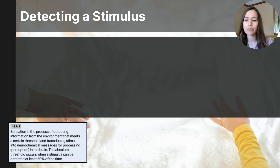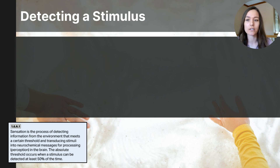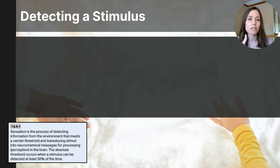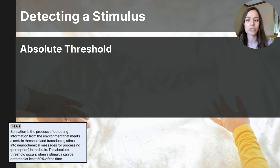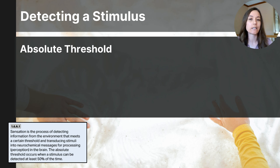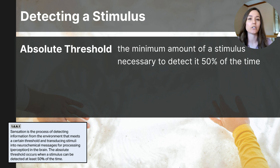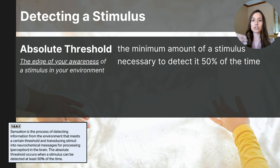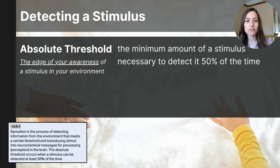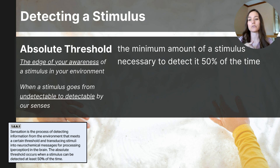Our sensory receptors detect stimuli in the environment, but at what point can they not detect something? We can't hear everything or smell all odors around us. At what point are my ears no longer picking up a sound, or is a scent too faint to pick up? This is referred to as a threshold — specifically the absolute threshold — which is defined as the point at which I can detect a stimulus with 50% accuracy. The absolute threshold is the minimum amount of a stimulus necessary to detect it 50% of the time, marking the edge of our awareness of stimuli in our environment.